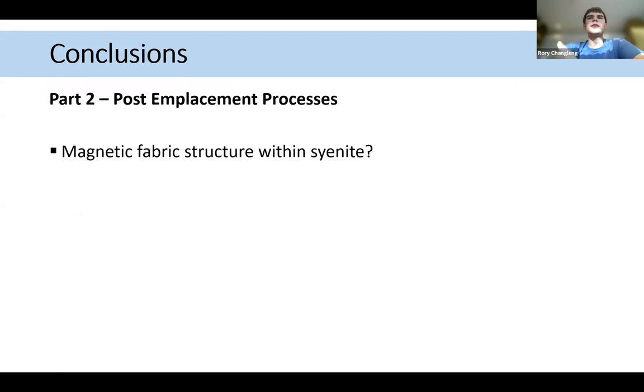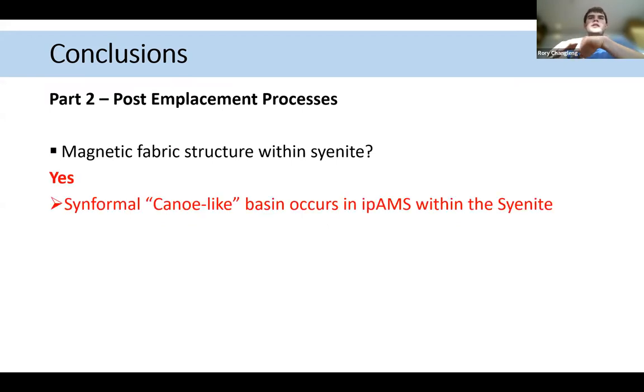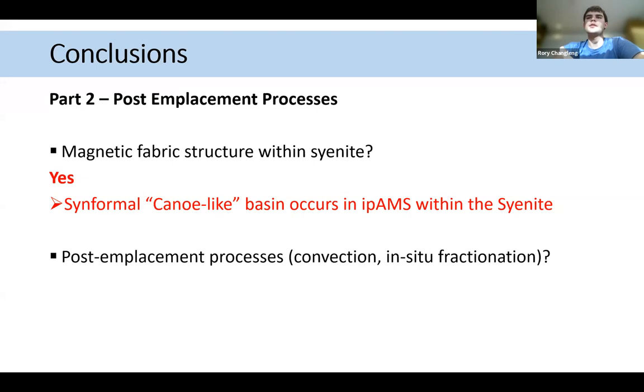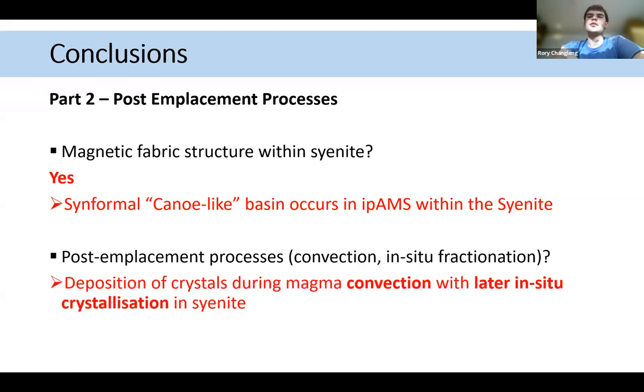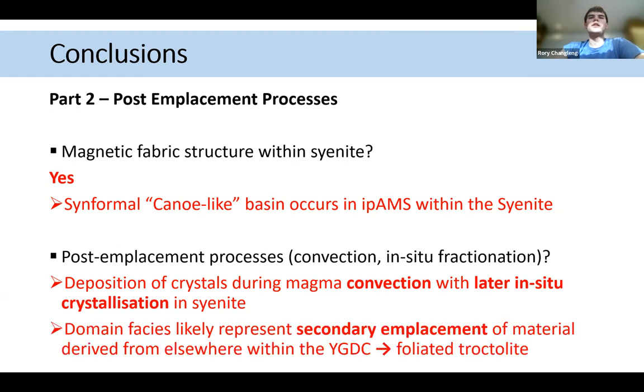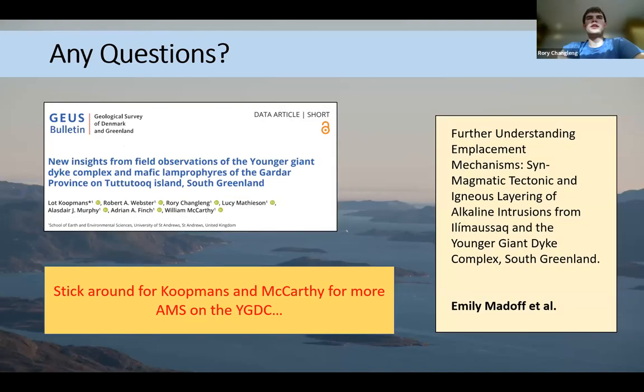Is there post-emplacement processes also occurring? So within the syenite, we do see these magnetic fabrics, which indicate this canoe-like basin, which has been attributed to convection as being most likely cause of this, with potentially later in situ crystallization as well. So that's me done. If you have any questions, please let me know. And just a shout out to some other work that we've been doing on the Younger Giant Dike Complex. Thank you.